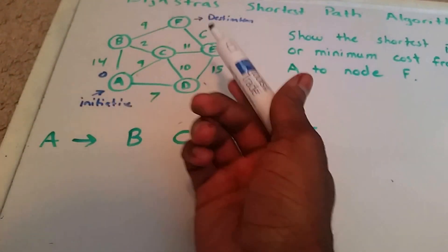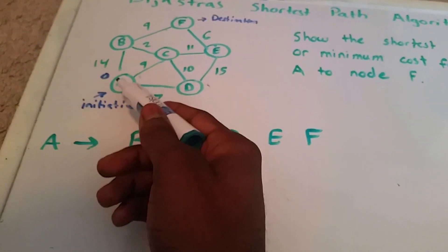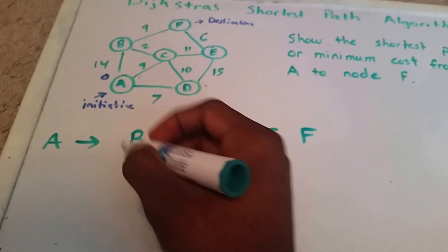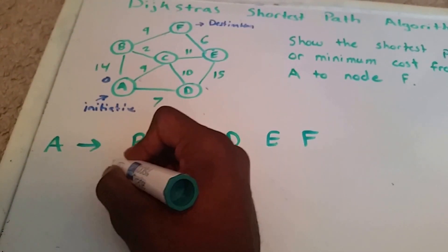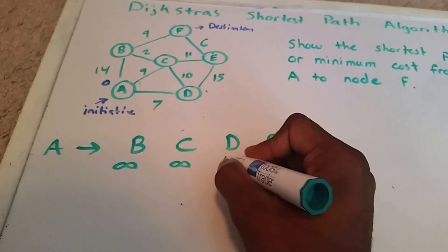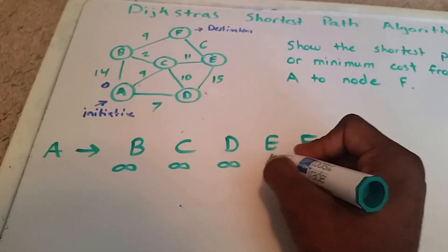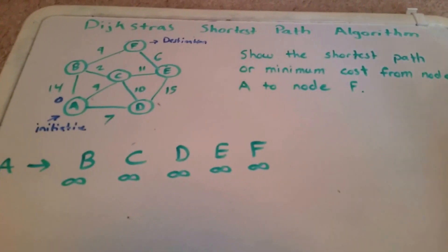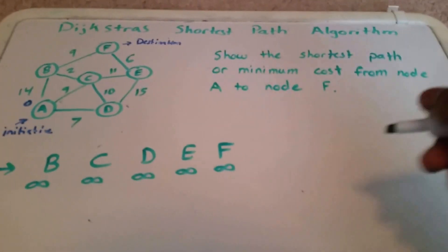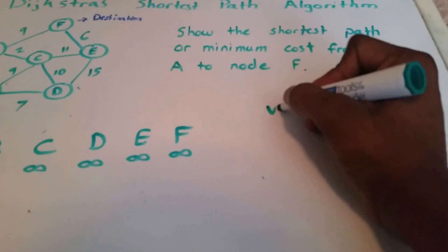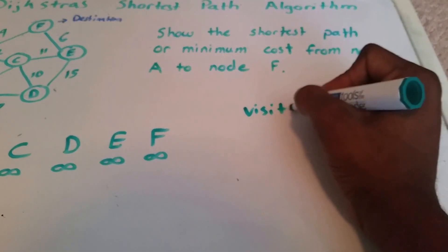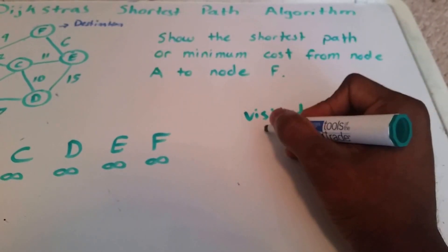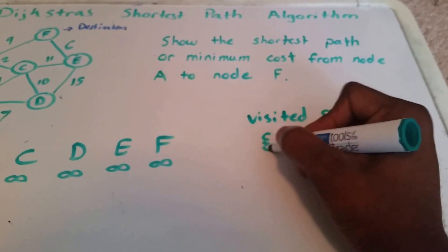The initiative node gets a tentative value of zero and all the rest of the nodes get a tentative value of infinity initially. We'll put infinity down for all the other nodes or vertices. Also, we're going to have a visited set that's initially empty.